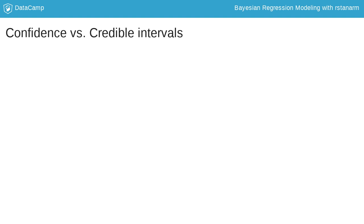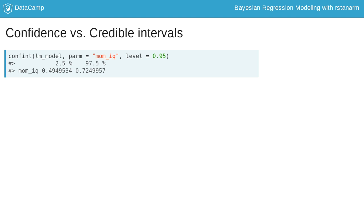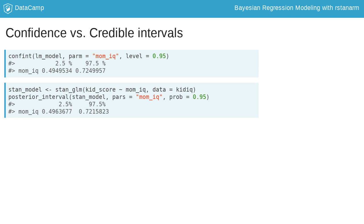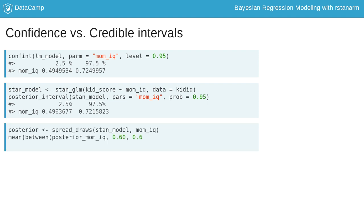These intervals look very similar to the corresponding confidence intervals. Here is the 95% confidence interval for the MOMIQ parameter in our frequentist model. This tells us that there is a 95% chance that the range of 0.49 to 0.72 contains the true value. But we're interested in the probability of the value falling between two points, not the probability of the two points capturing the true value. This is what the credible interval gives us. As you can see, these intervals give very similar ranges, but the inferences are very different. In the Bayesian scenario, we can ask: what is the probability that the parameter is between 0.6 and 0.65? And we see a 31% chance the true value is in that range. We can't do something similar with confidence intervals from a frequentist model. Only Bayesian methods allow us to make inferences about the actual values of the parameter.